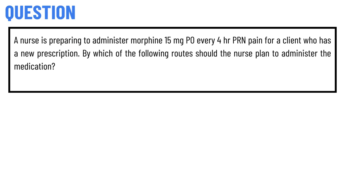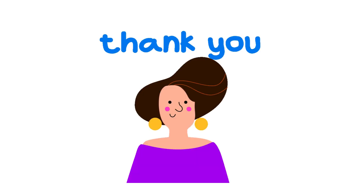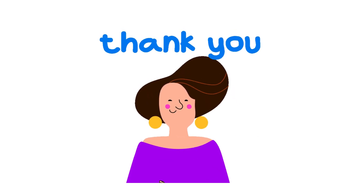A nurse is preparing to administer morphine 15 mg PO every four hours PRN pain for a patient who has a new prescription. By which of the following routes should the nurse plan to administer the medication? The correct answer is by mouth.